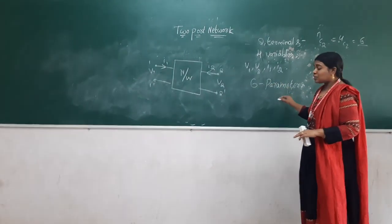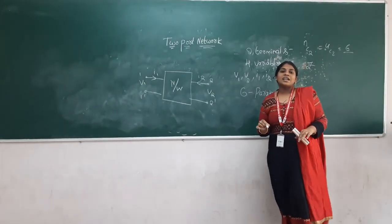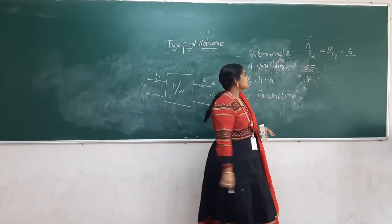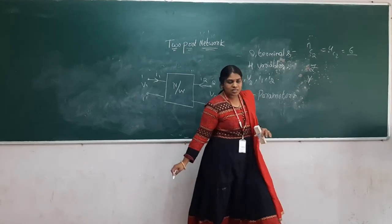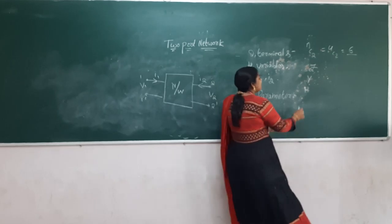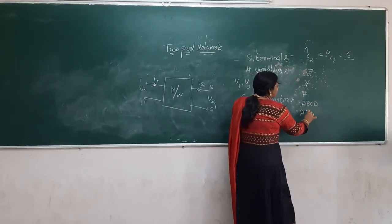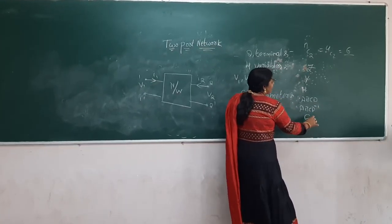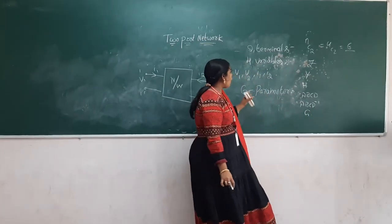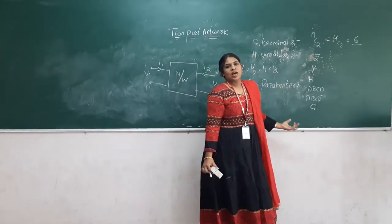What are those six parameters? First are Z parameters — impedance parameters. Next are Y parameters — admittance parameters. Then H parameters, which are hybrid parameters. Next are A, B, C, D parameters — transmission parameters. Then inverse A, B, C, D parameters. And finally G parameters. These are the six parameters from the four variables of a two-port network.